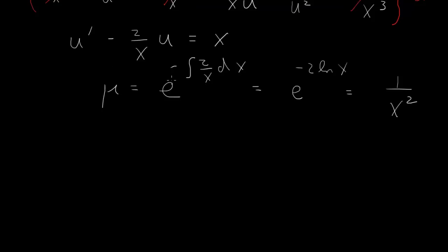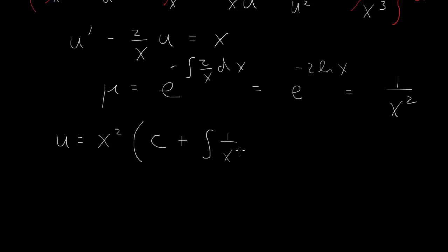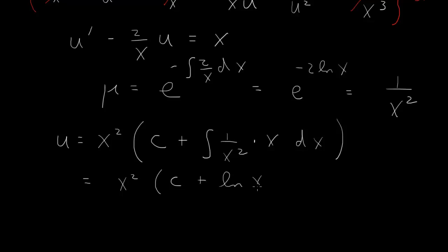When you multiply through by the integrating factor and integrate, you find that u equals x squared times a constant, plus the integral of 1 over x squared times the right-hand side x dx. This is an integral of 1 over x, so that's a log. This gives u equals x squared times the quantity c plus log x.